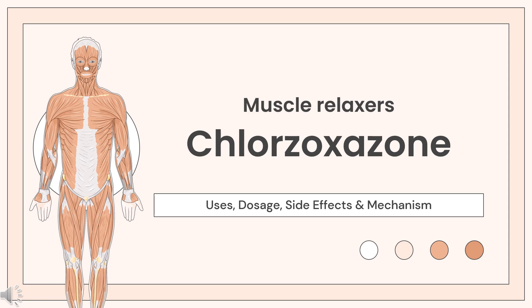Chlorozoxazone is a drug with muscle relaxant properties that is used as an adjunct to physical therapy and analgesics to treat stiffness and pain caused by a variety of musculoskeletal conditions.